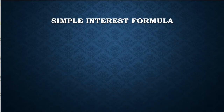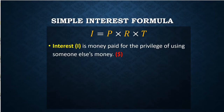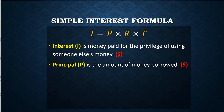So let's look at the simple interest formula. It's a simple multiplication formula. You can see we have I on the left of the equal sign, and then P, R, and T on the right, and all of them are multiplied together. The I stands for our answer, interest — the money paid for the privilege of using somebody else's money — and that's always measured in dollars. The P is the principal, or the amount of money that's being borrowed. It's also measured in dollars.